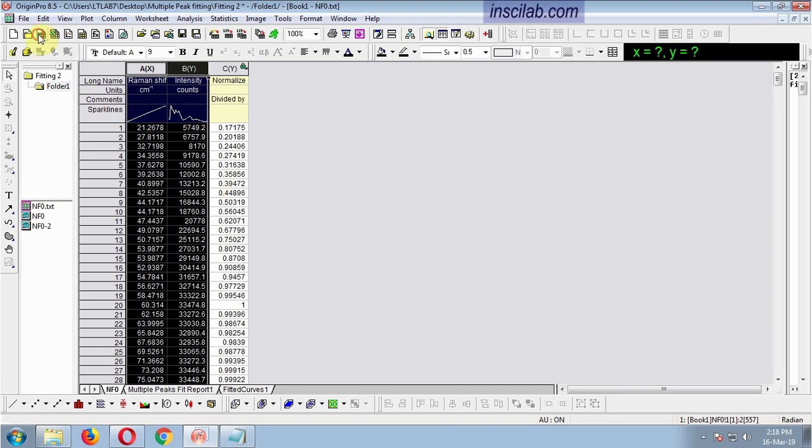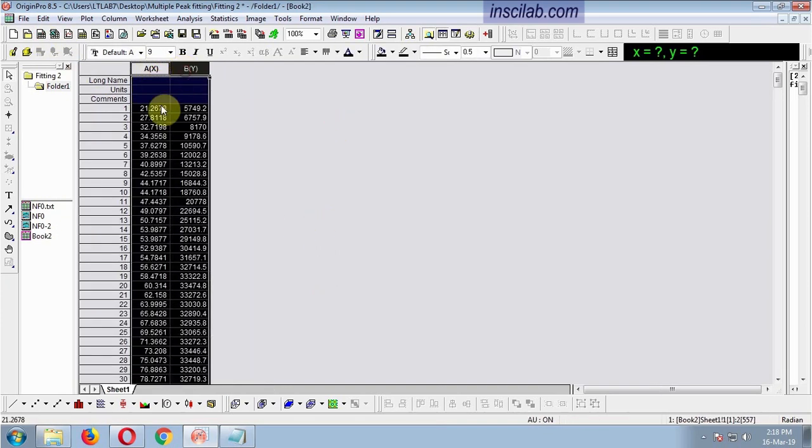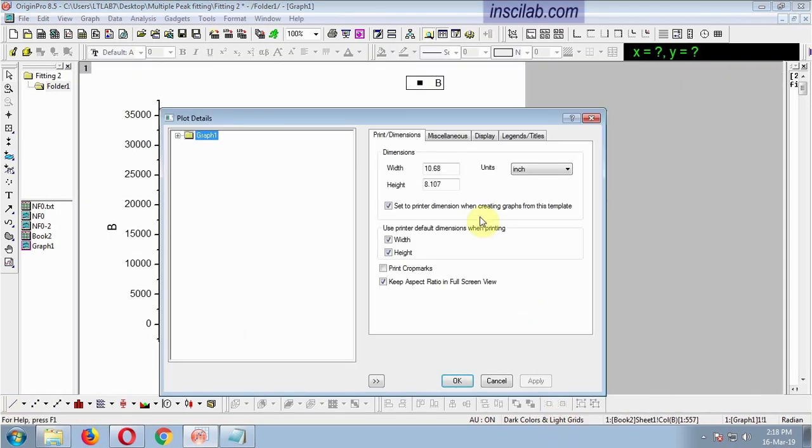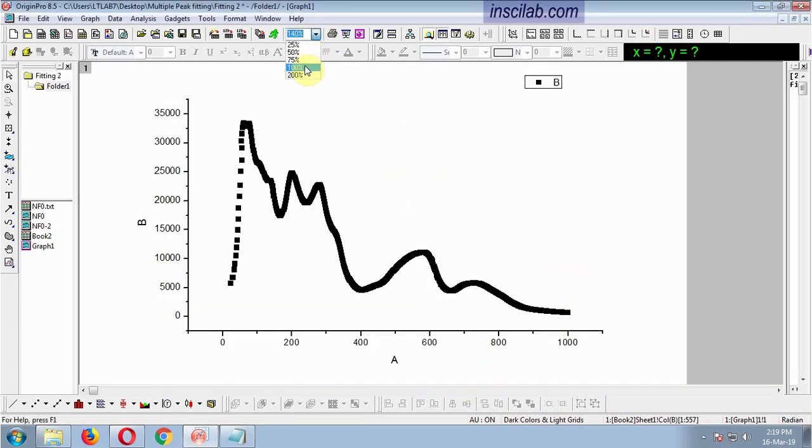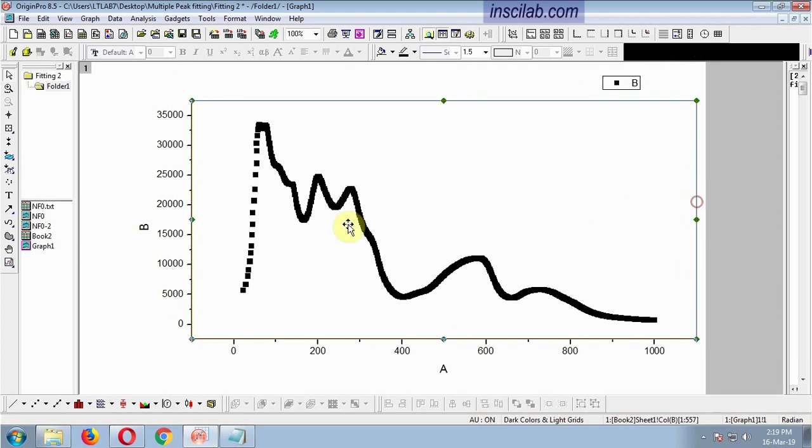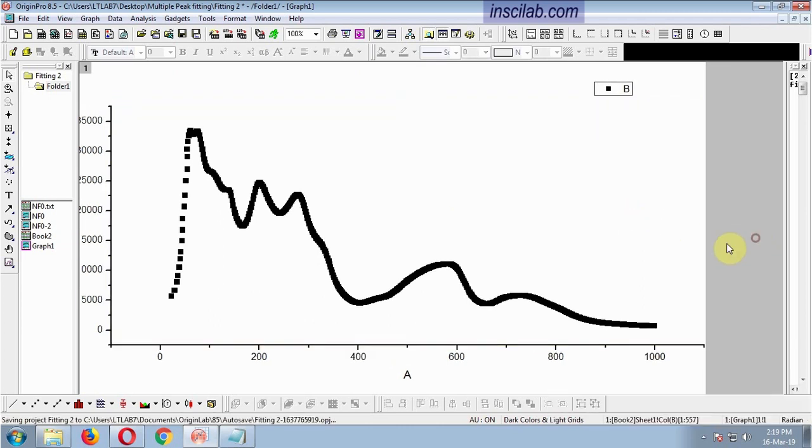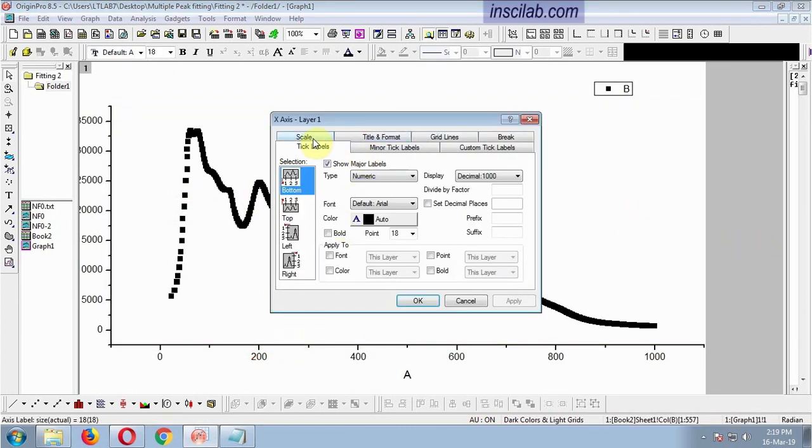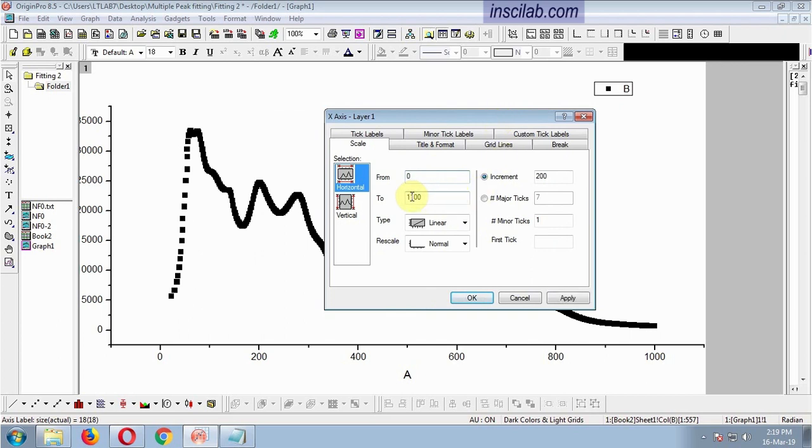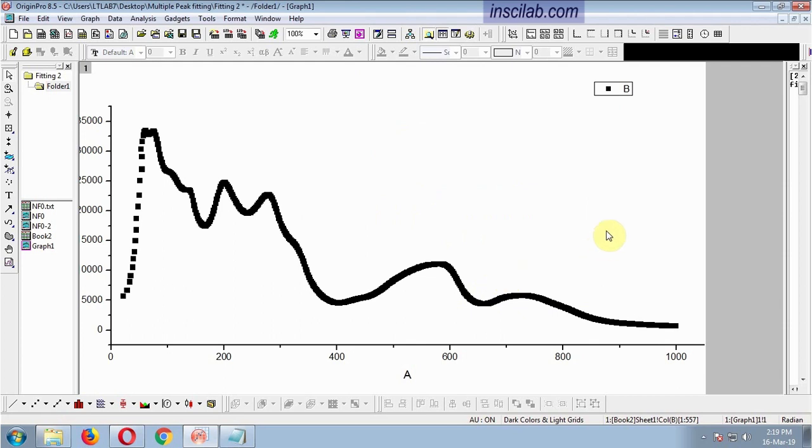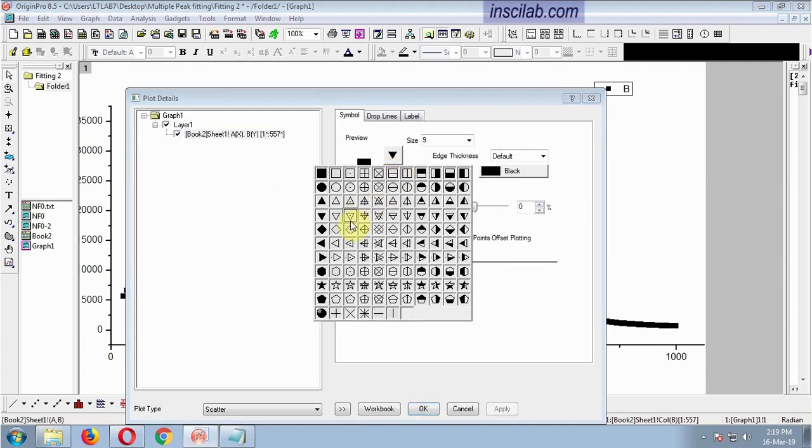I am taking data to a new workbook. Plot the data in scatter type. For better visibility, adjust the dimensions. Adjust the scale. Change the symbol to open circle.